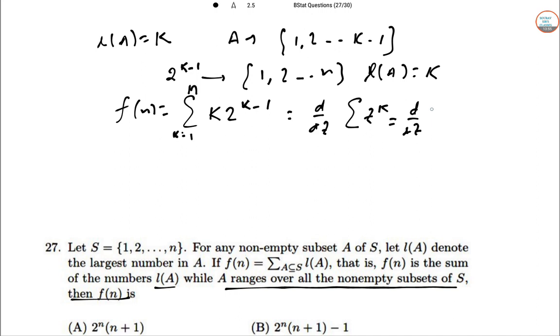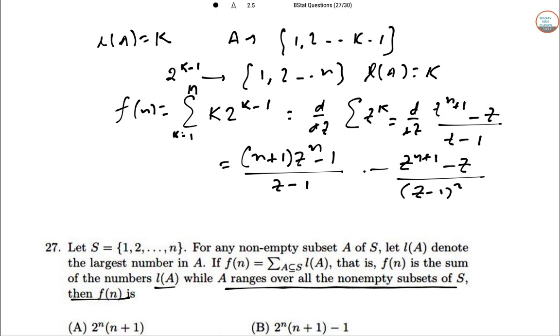Now in this case d/dZ of Σ Z^K. This is d/dZ of (Z^(N+1) - Z)/(Z-1). So that is [(N+1)Z^N(Z-1) - (Z^(N+1) - Z)]/(Z-1)².